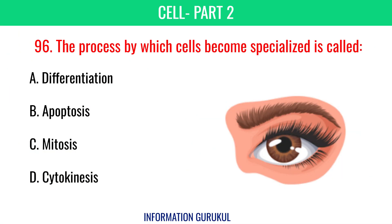The process by which cells become specialized is called differentiation.